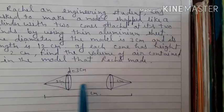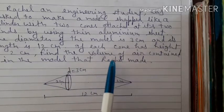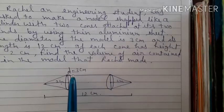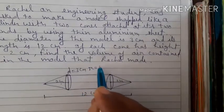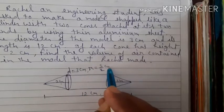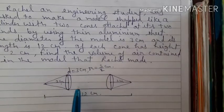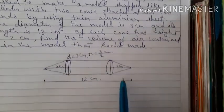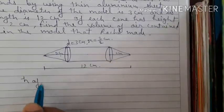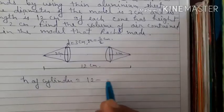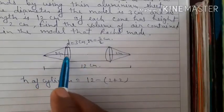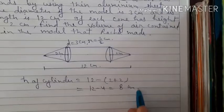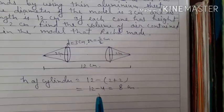Volume of air contained in the model equals volume of cylinder plus volume of two cones. Radius equals 3/2 cm since diameter is 3 cm. Height of cone is 2 cm. Height of cylinder equals total length minus the heights of both cones: 12 − (2+2) = 12 − 4 = 8 cm.